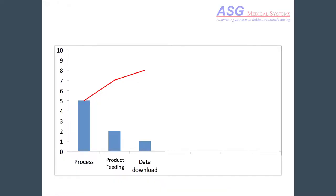Most factories have to do changeovers — they're not just running one product. So we need to think about automating the changeover process. This requires two elements. The first is data download, also known as recipe storage. This simple but important function gives us the ability to change processes quickly without having to enter numbers into the machine. Data entry errors are eliminated and the setup is the same every time. For a complex process, this feature adds a lot of goodness.